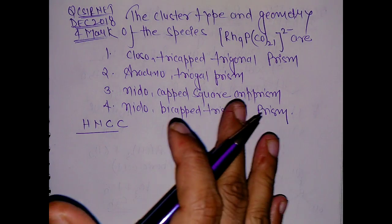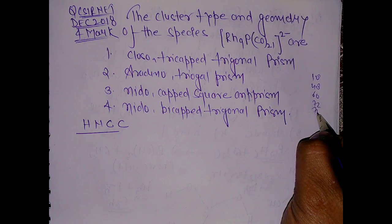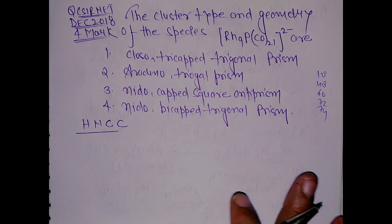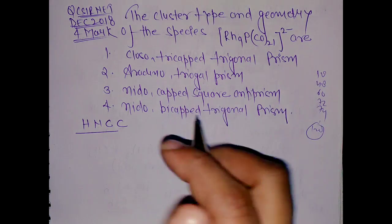Generally students just mug up the series which is 18, 48, 60, 72, 74, and something like that. That series goes up to like 120 valence electrons.